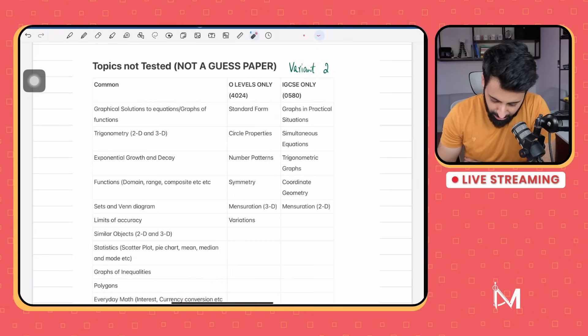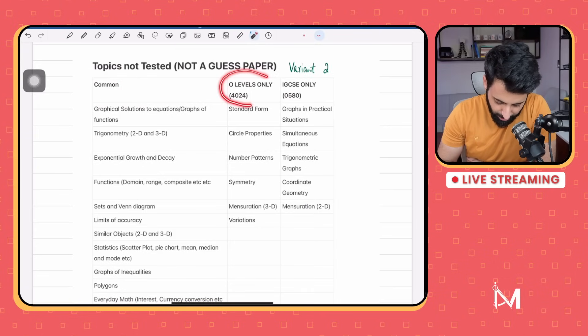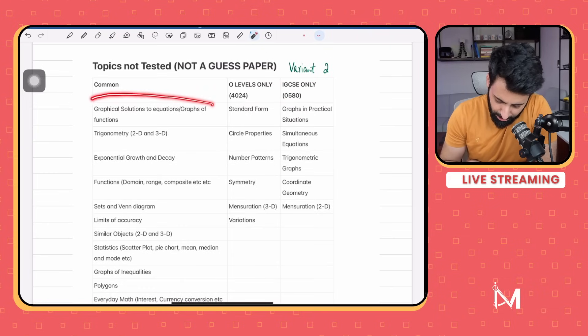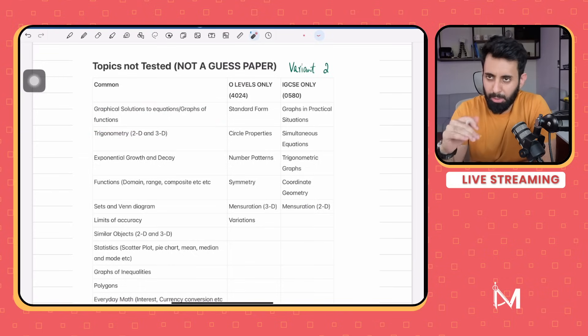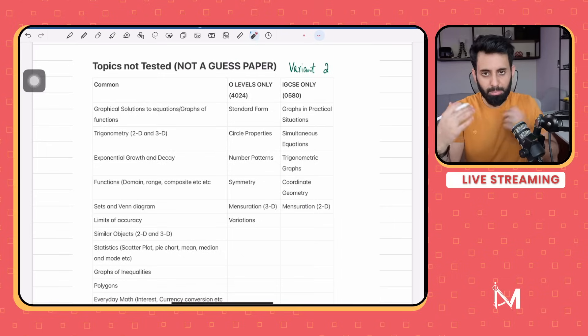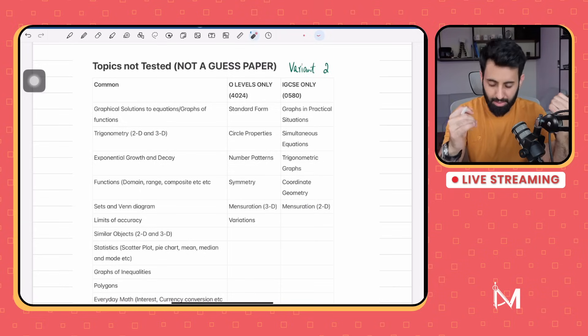These are some common topics, common in the sense that they were not tested in either O-levels or IGCSE. Here I made a column for O-levels only and here another column for IGCSE only. The first one is graphical solutions to equations. Now a disclaimer, there was a question in IGCSE where you had to find out the equation of asymptotes, draw lines for a certain number of intersections, stuff like that. But because this topic is so extensive and involves curve sketching as well, I'm expecting a certain part of it to be tested in O-levels and IGCSE as well.